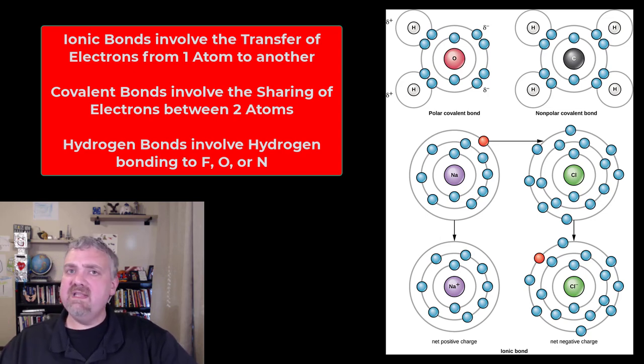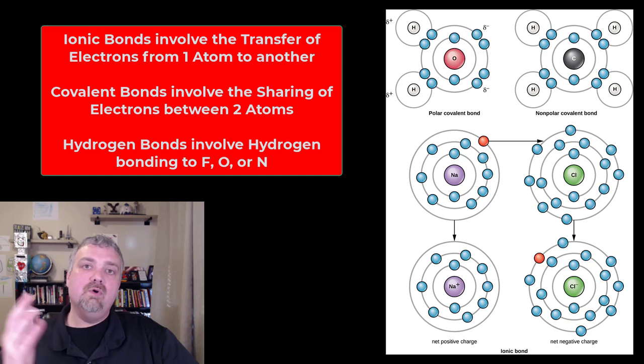But let's start with the ionic bonds in the bottom. An ionic bond is going to be anytime atoms gain or lose electrons to bond together to make sure they're happy.